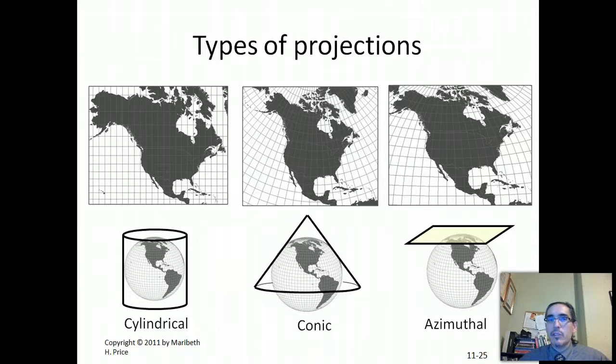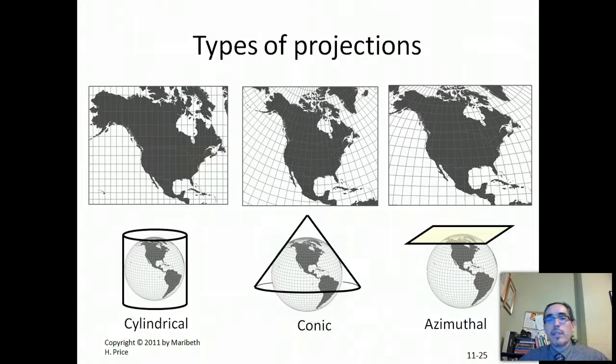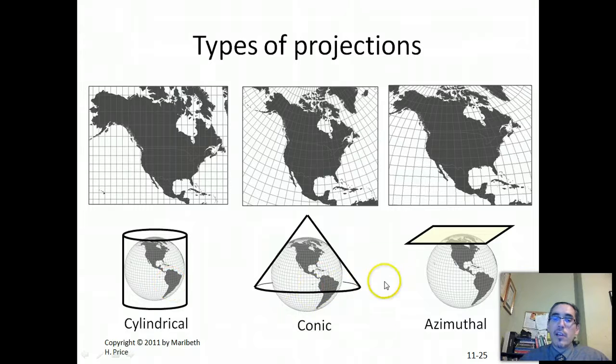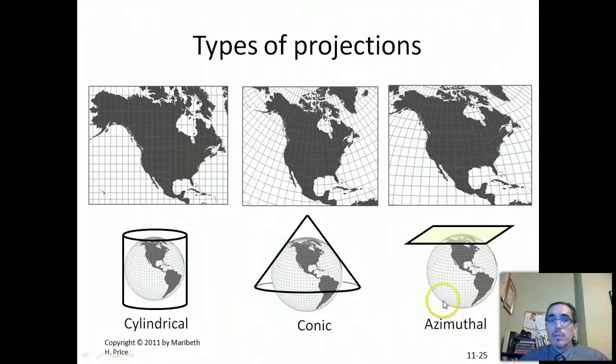A projection is kind of a mathematical transformation that's applied to coordinates and locations to make them fit a particular transformation, to make them translatable onto a flat surface. The three surfaces that are referred to when we work with projections are the cylinder, the cone, and then this flat surface, which we refer to as azimuthal or sometimes orthographic.